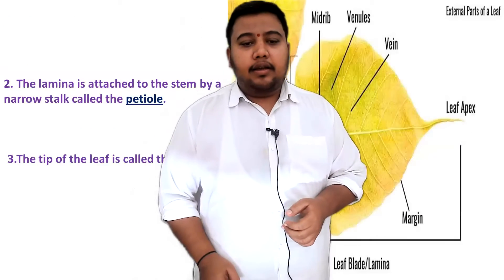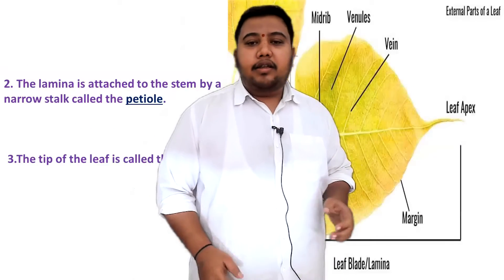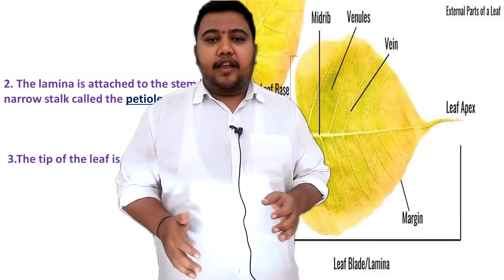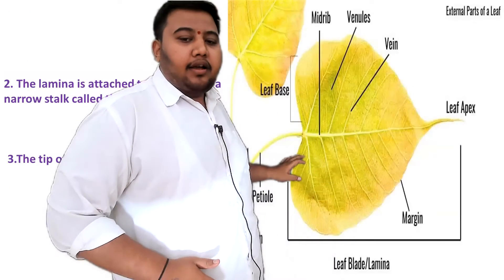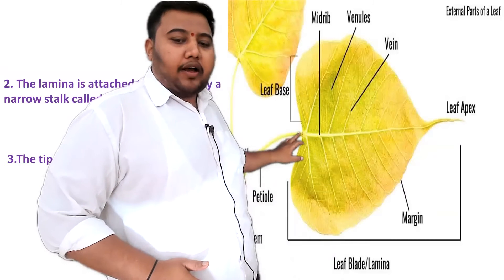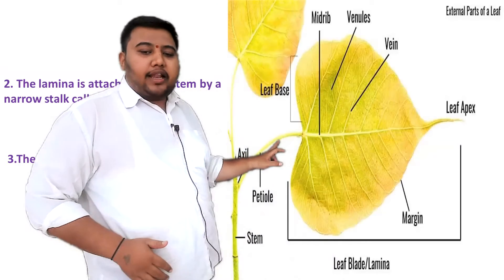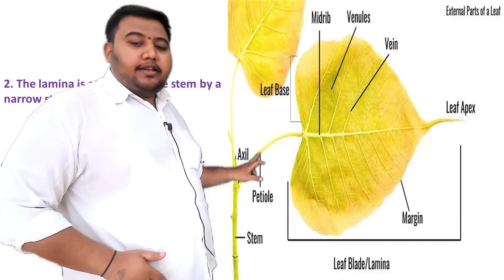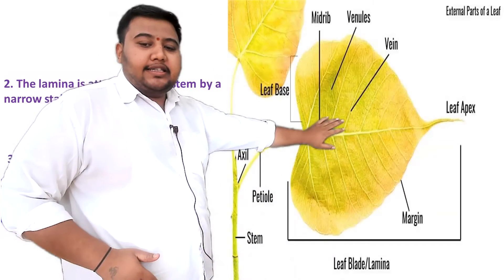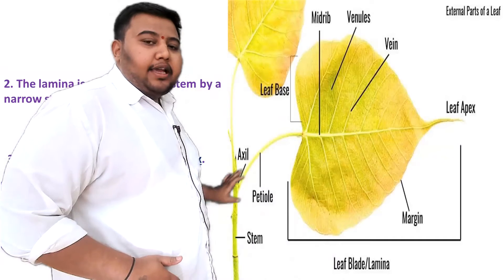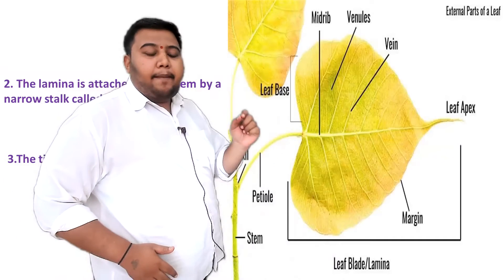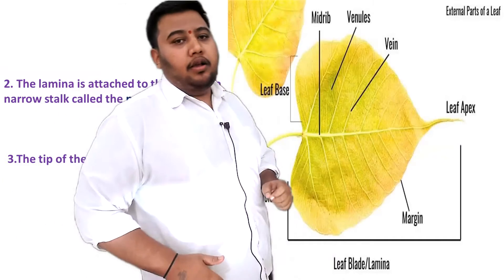The leaf is attached to the stem by a thin stalk-like structure. This thin stalk-like structure which attaches the leaf to the stem is called the petiole.